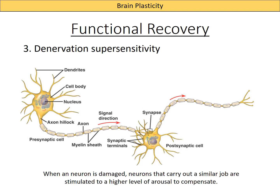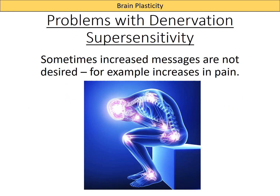A third way in which function could possibly be recovered in the brain is through the idea of denervation supersensitivity. This is when a particular neuron is damaged and neurons that carry out similar jobs are stimulated to a higher level in order to compensate — essentially stimulating a different neuron at twice the level in response to the damaged one. This can also cause problems, because some messages you don't want increased — for example pain — you don't want the stimulation of pain to be increased, so it can cause problems in those areas.